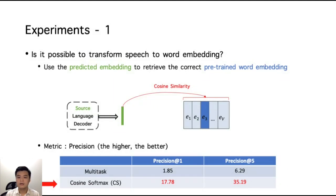As we can see, the cosine softmax method achieved higher precision than the original multi-task loss. It indicates that it is possible to predict word embeddings from speech.